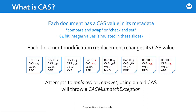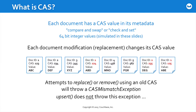Anytime you attempt to replace or remove a document that has an old CAS value, you're going to get a CAS mismatch exception. Notably, upserts do not throw this exception. Think about how there are two different possible workflows: workflows based on insert, replace, and remove operations where CAS is being checked and you have locking in place, or maybe you just need mass ingestion, in which case upsert speeds you to the solution.